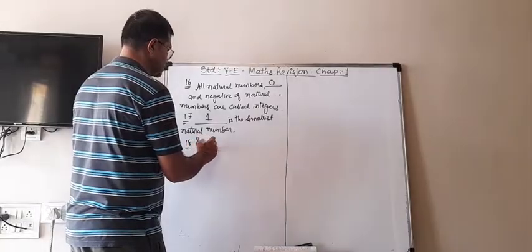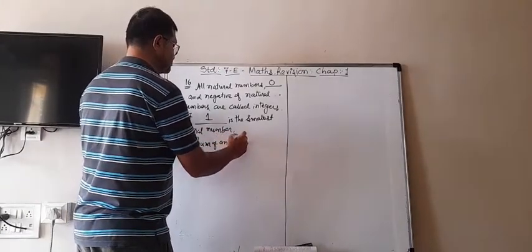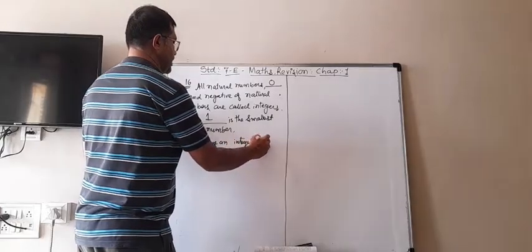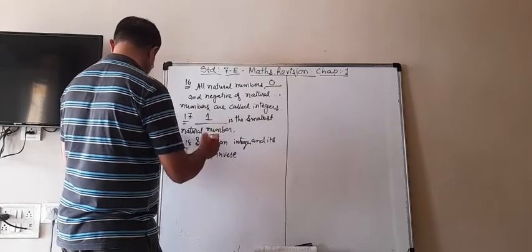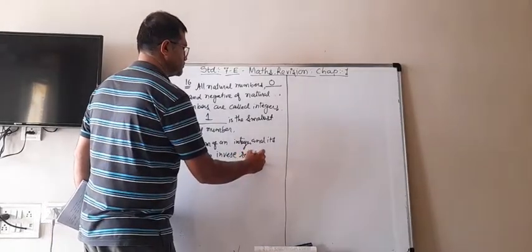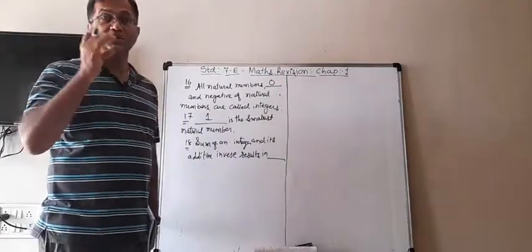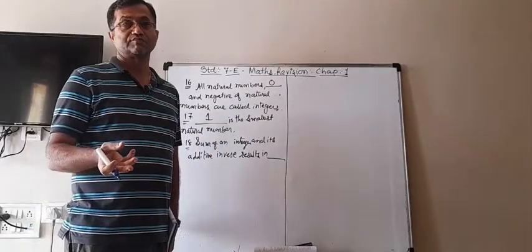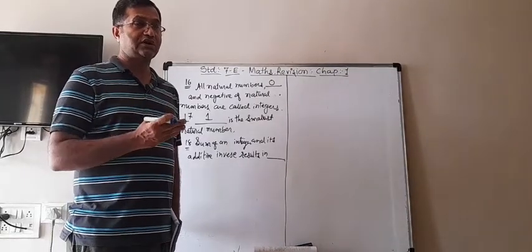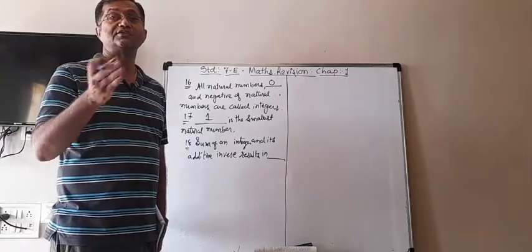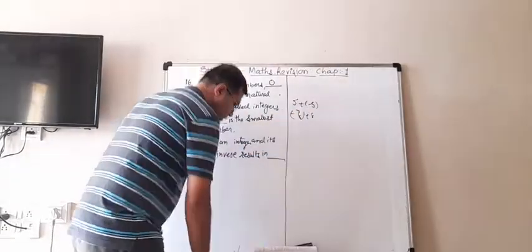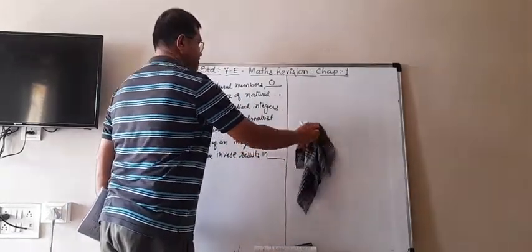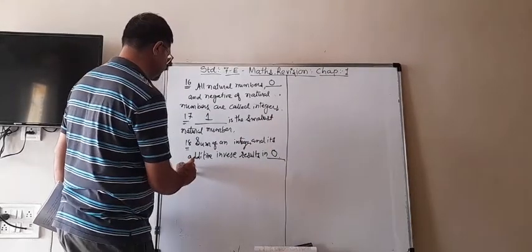Blank 18: the sum of an integer and its additive inverse results in blank. We know that when we add an integer and its additive inverse, the answer always becomes zero. For example, 5 + (-5), or -8 + 8. So the answer is zero.